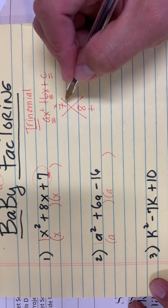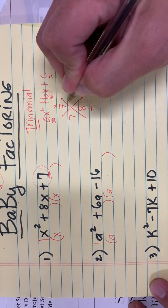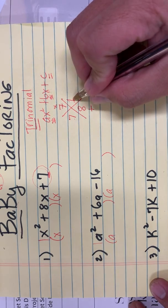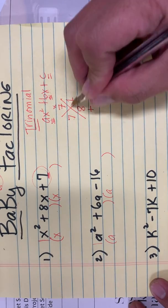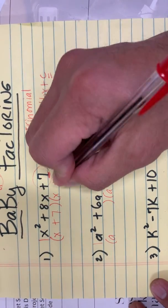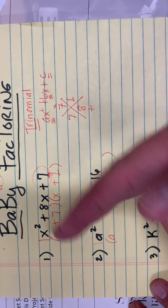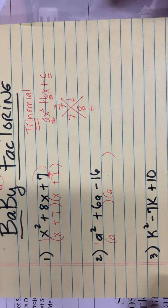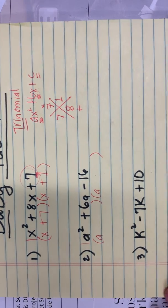Two numbers: 7 and 1. You're right. 7 times 1 is 7, 7 plus 1 is 8. So therefore, the answer is plus 7 plus 1. You can swap the 1 and 7, put the 1 here and 7. It's not going to change the answer.